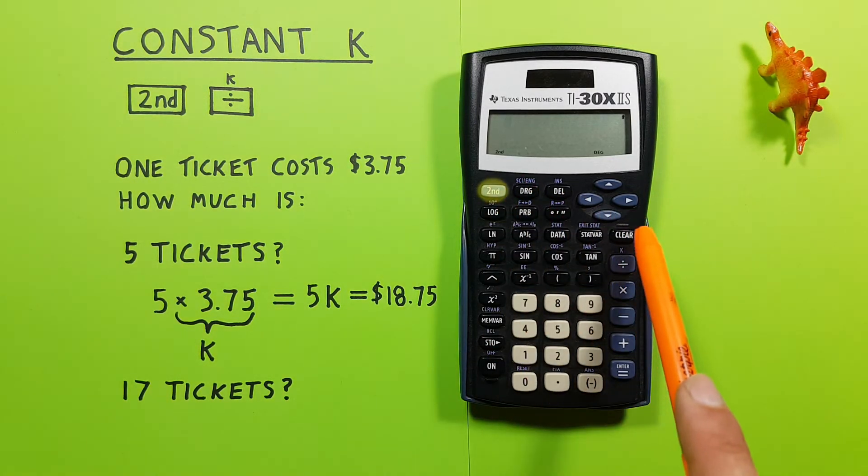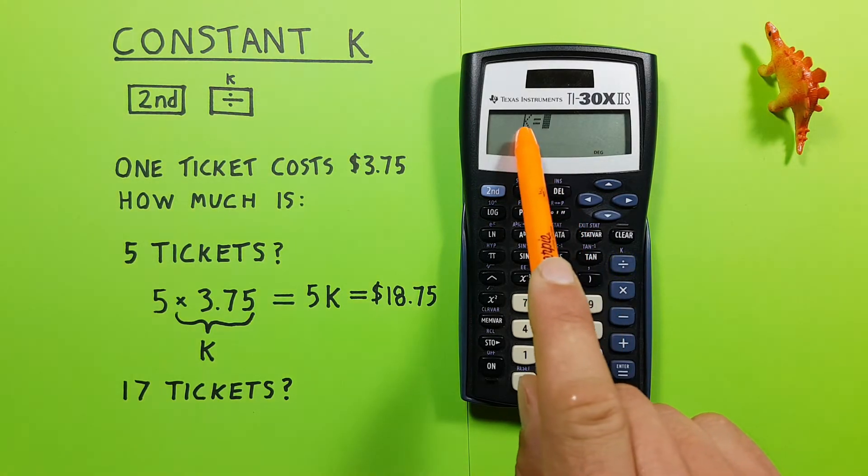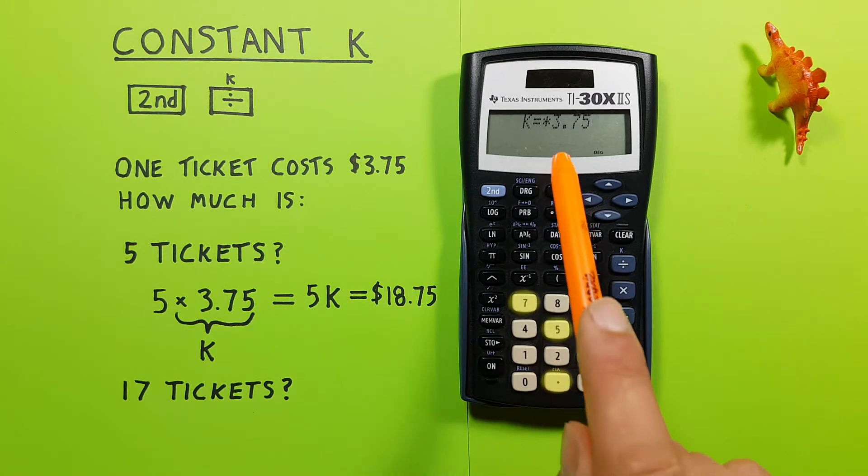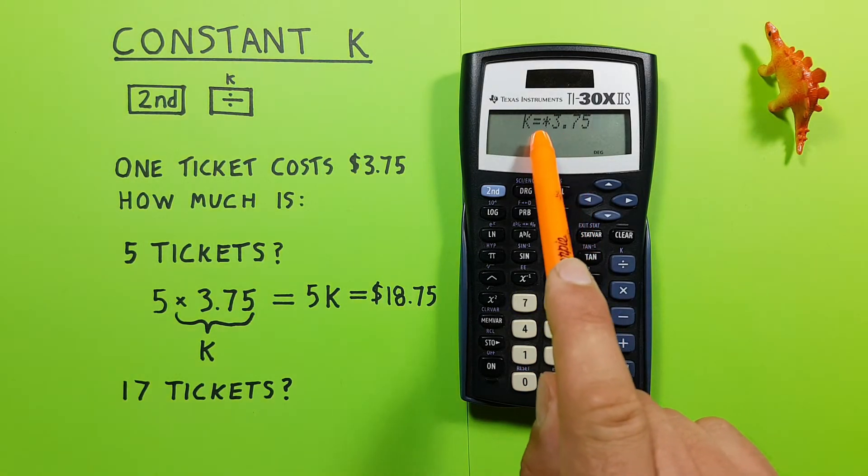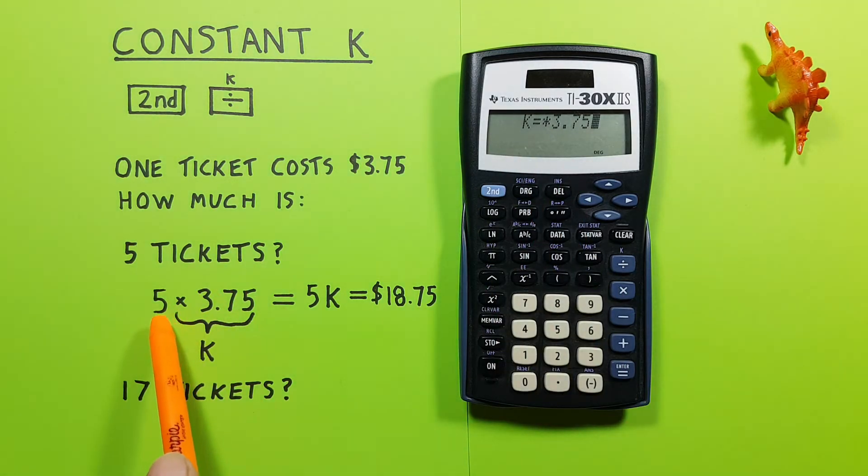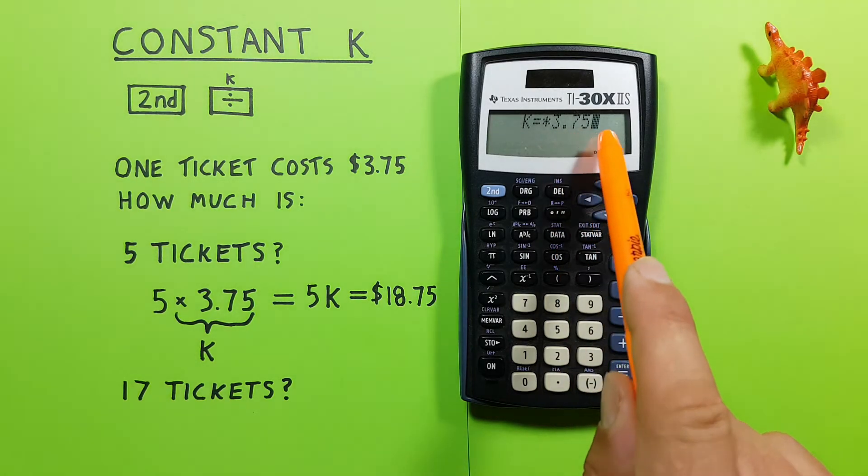So we go to second division, there's our K. And for this, we'll set our function to times 3.75, which is the price of our tickets. So times 3.75. And you want to make sure to always have an operator, which is a plus, minus, division, multiplication, at the start, because this will be applied to the end of whatever we enter on our screen. So there we go, K equals times 3.75.